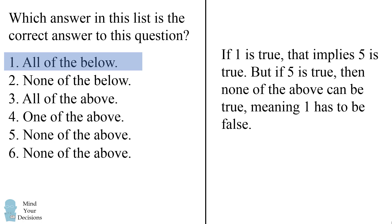If statement 1 is true, that implies all of the statements below, including 5, are true. But if statement 5 is true, that means none of the statements above 5 can be true, including statement 1. That would imply statement 1 has to be false. This means 1 is a self-contradicting statement and cannot be true. So we'll mark that statement 1 cannot be true.